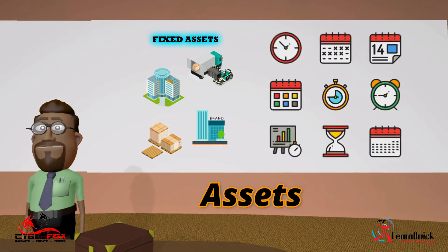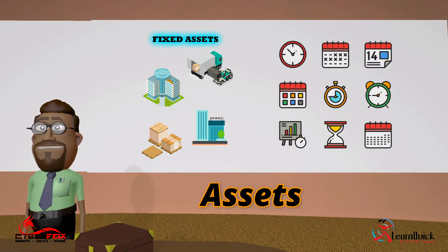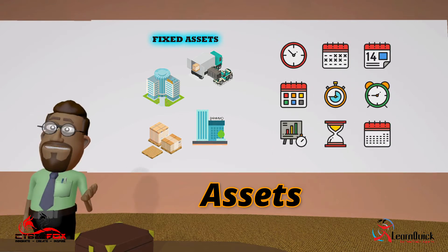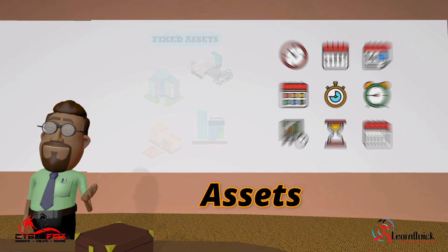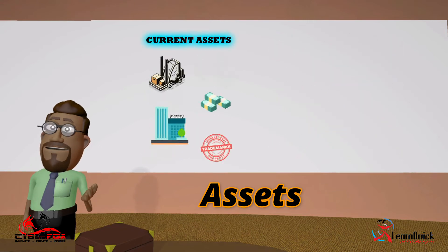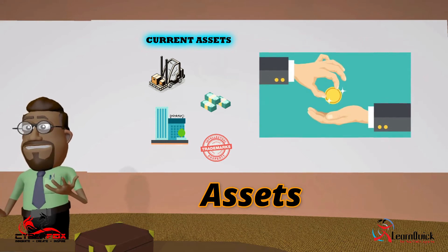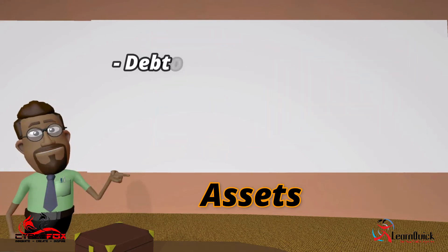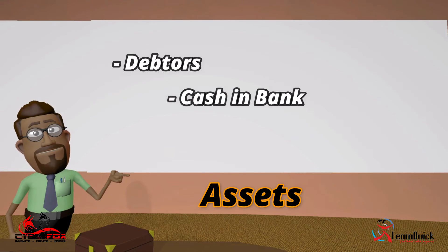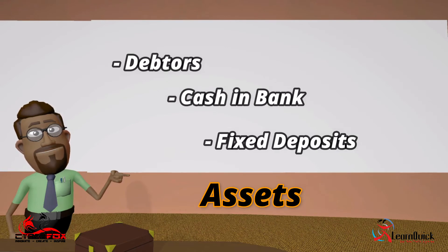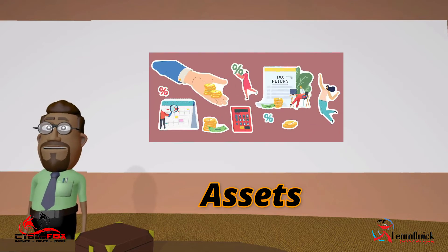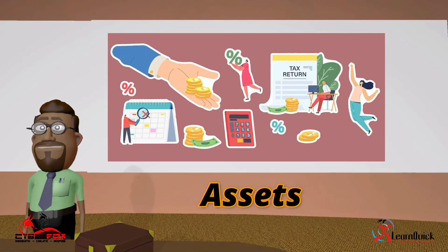Fixed assets normally last for more than three months and depreciate in value over time. Current assets are short-term collectibles and can be liquidated within the period of three months or less, such as debtors, cash in bank, and fixed deposits. Current assets last less than three months and they do not depreciate in value.